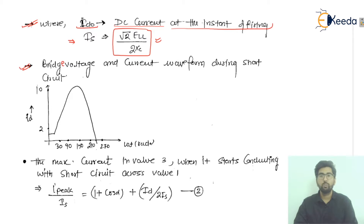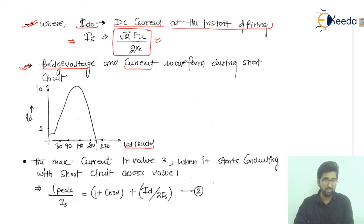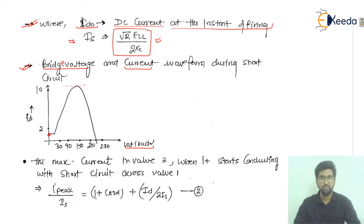Next we look at the bridge voltage and current waveform during the short circuit condition. The graph shows omega in radians on the x-axis and the id current on the y-axis. There is a peak value, a residual value, and the waveform shows a positive loop of oscillatory motion.